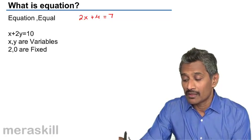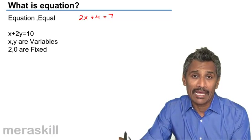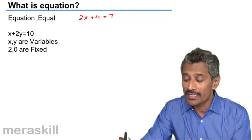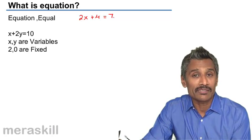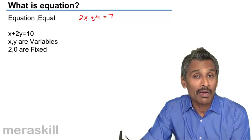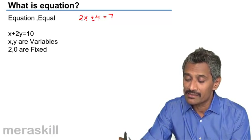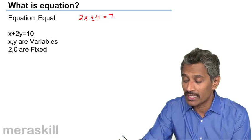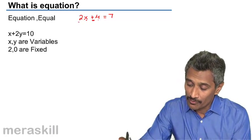You can translate it in the form that 4 more than twice the amount I have is to be 7. The amount is not known, so we call it x. Twice the amount, 4 more than that, is 7. So you are forming an equation.